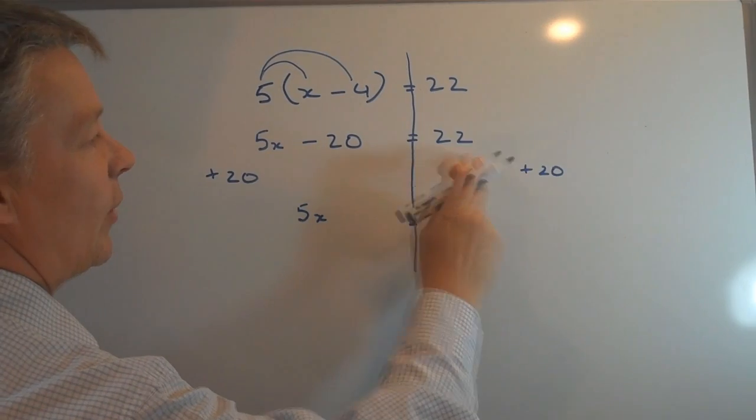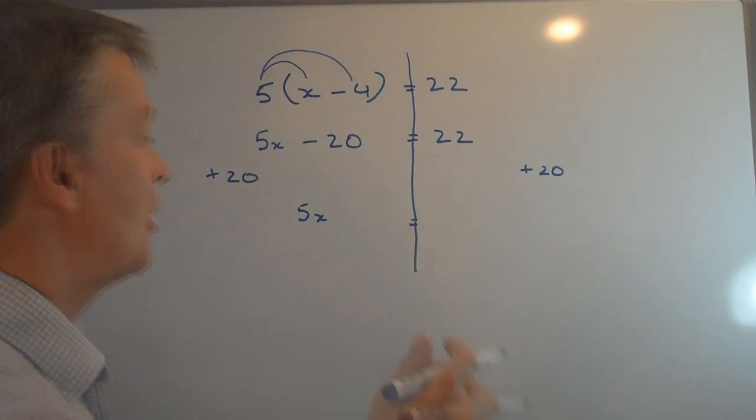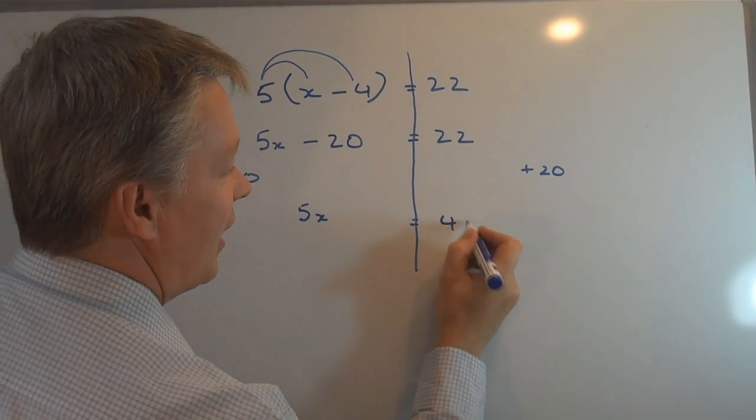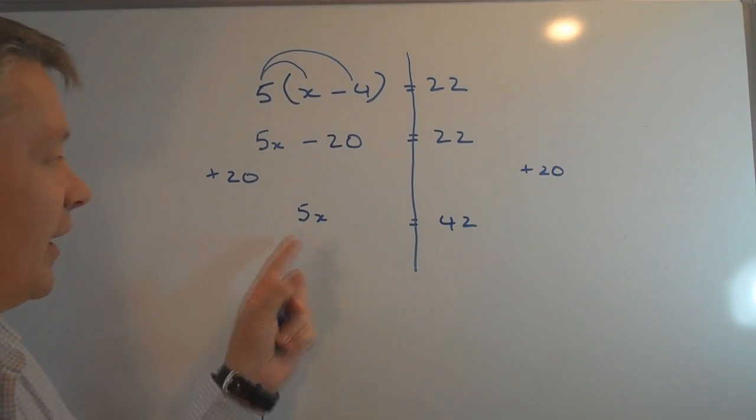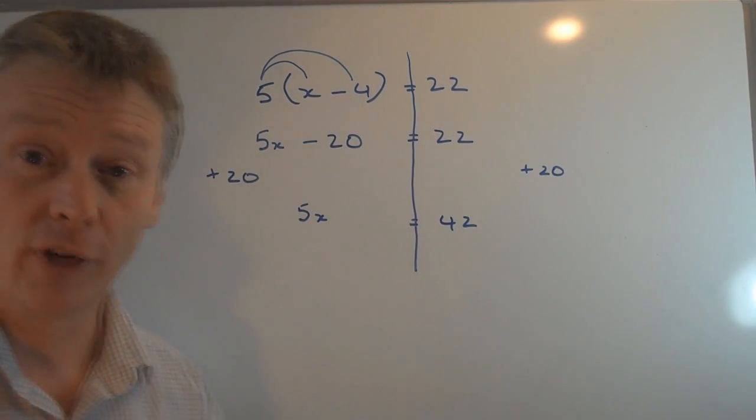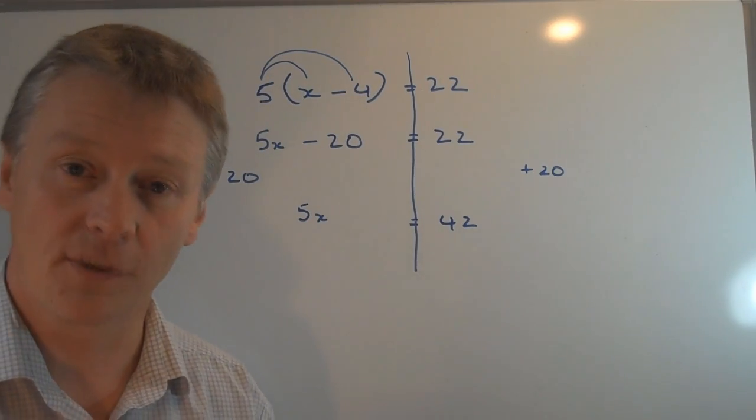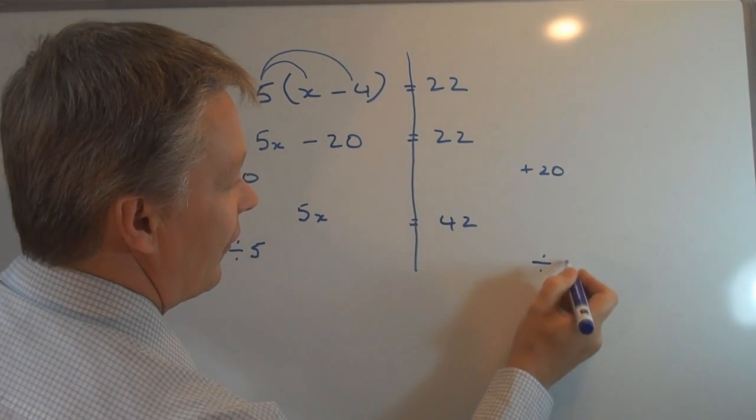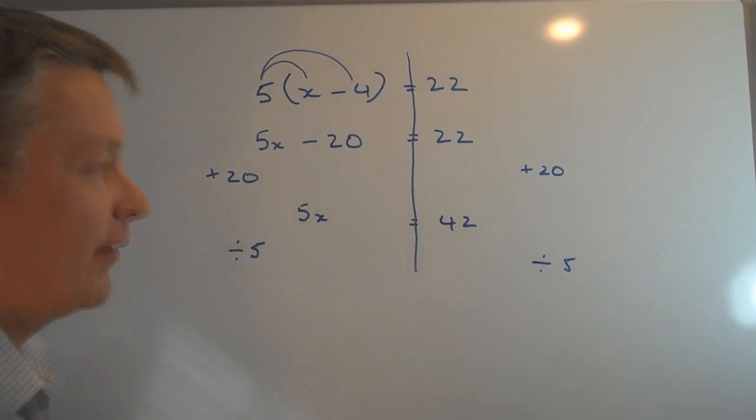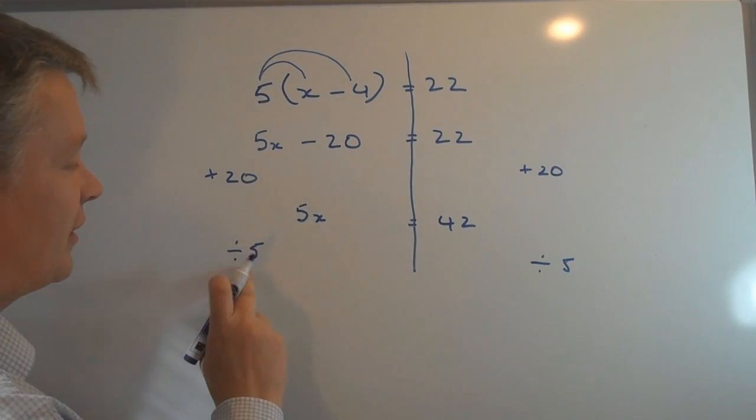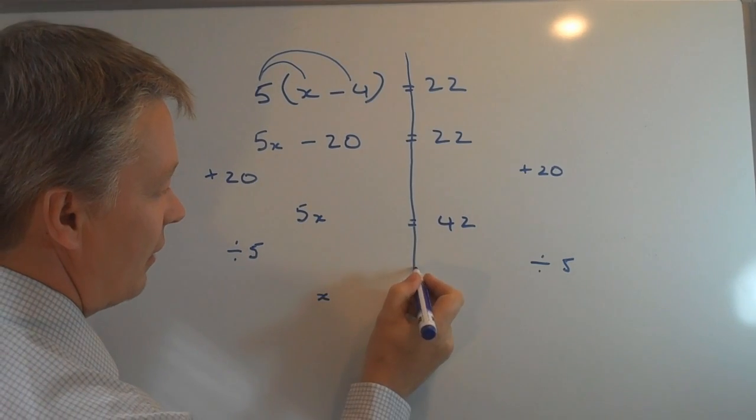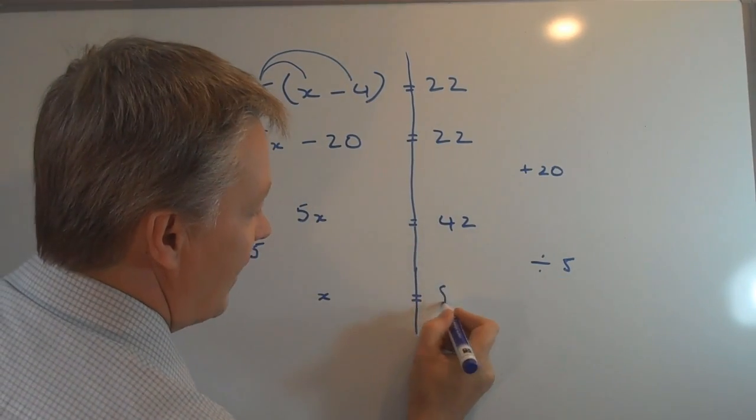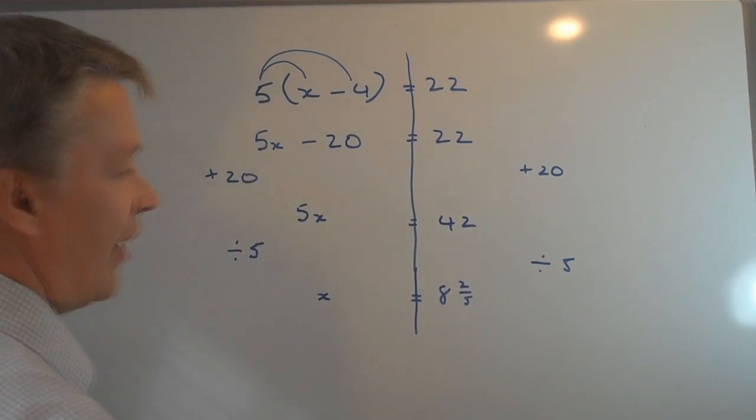Okay, on the other side I have 22 plus 20 because I've added 20 to both sides, so 22 plus 20 is 42. Then I have a value of 5x, and really I just want one single value of x, so what I'm going to do is divide both sides by 5. Divide by 5 there and divide by 5 there. And if I do that,